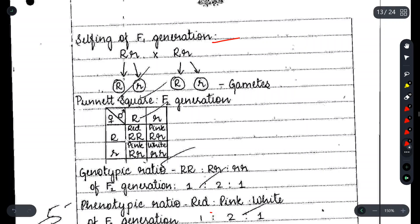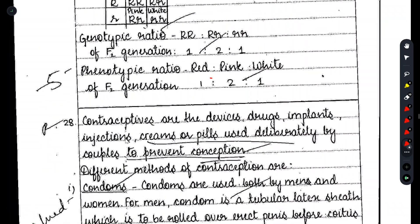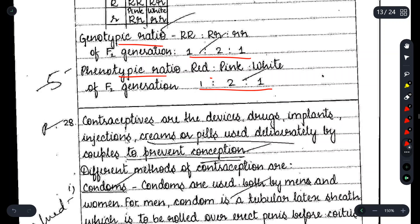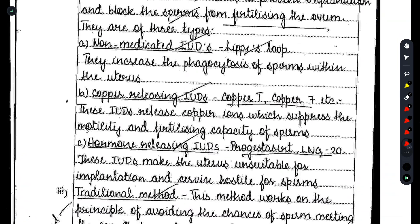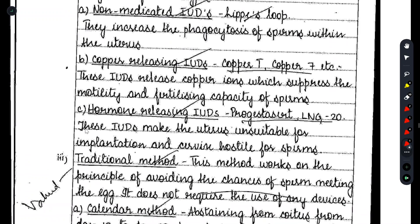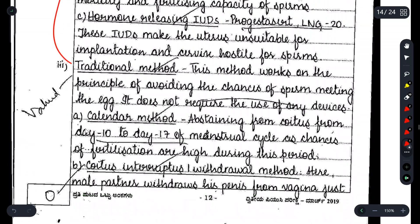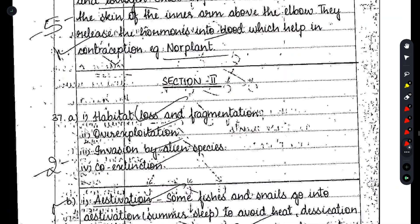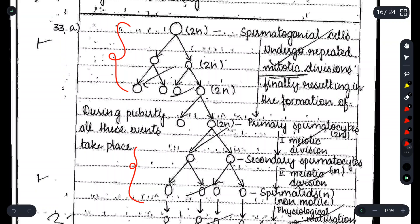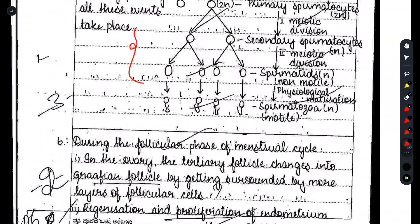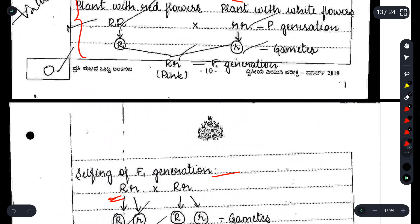The topper also did crossbreeding diagrams cleanly — showing male crossed into female, F1 generation and F2 generation. The genotypic and phenotypic ratios are neatly represented: 1:2:1 and 1:2:1, showing pink, red, and white phenotypes. For Part D 5-mark questions in this theoretical subject, you must write cleanly and avoid scribbles and scratches.